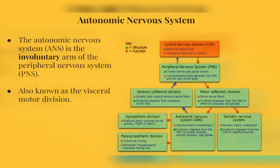The autonomic nervous system is the involuntary branch of the PNS, the peripheral nervous system. Involuntary means to do something unconsciously or without will. When you hear autonomic, think automatic. The autonomic division of the PNS carries out a lot of the functions in the body that are done automatically without will.